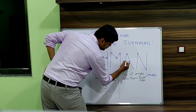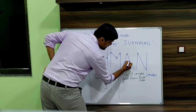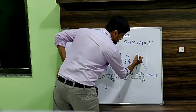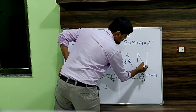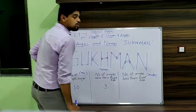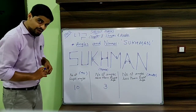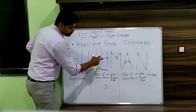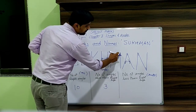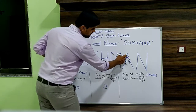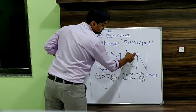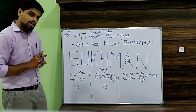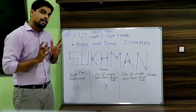A has this 1, this 2, and this 3. Finally, N has 1 and 2. So let's count the total number of acute angles: 1, 2, 3, 4, 5, 6, 7, 8, 9, and 10. The total number of acute angles is 10.